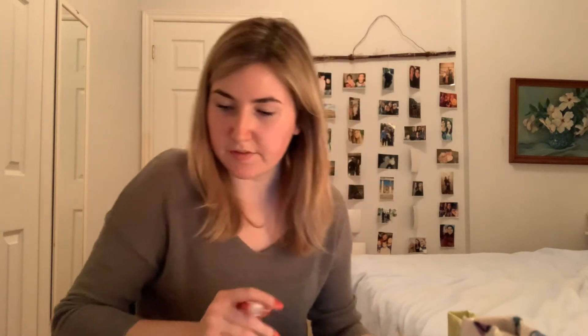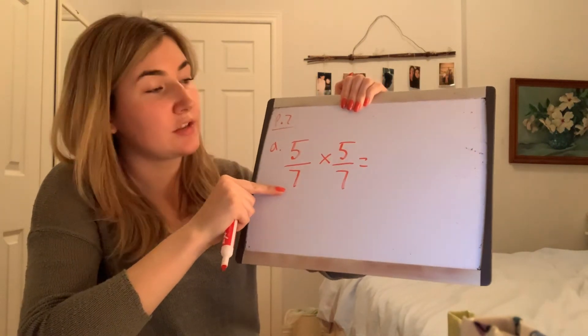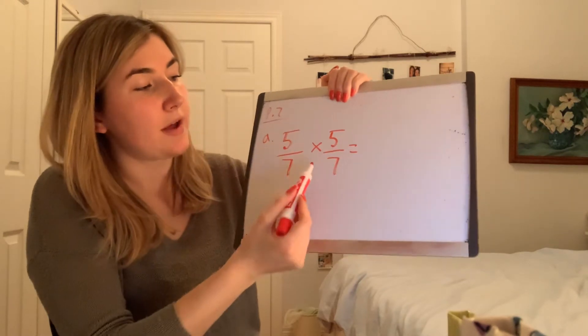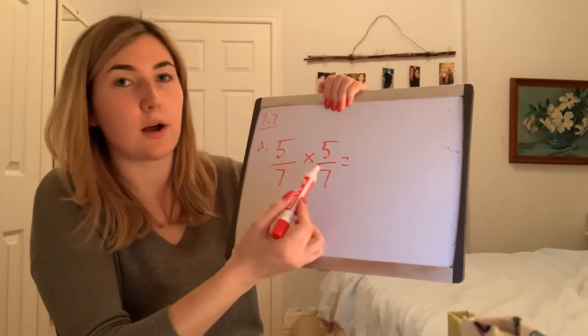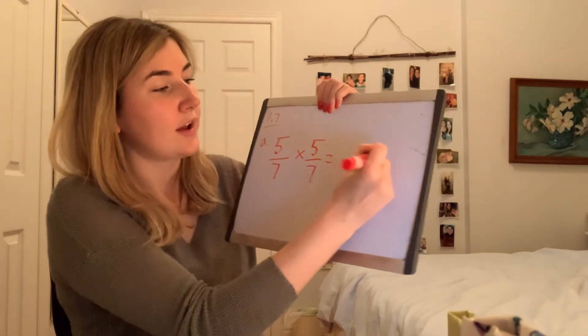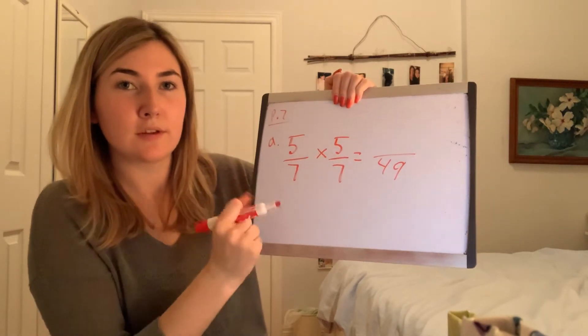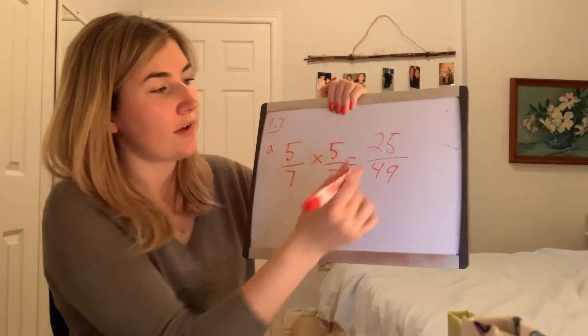For part 7 we're multiplying, adding, and subtracting fractions. In A we have 5 over 7 times 5 over 7. Remember when we're multiplying, both the top and the bottom number will change — it doesn't matter if it's the same bottom number. So our bottom is 7 times 7 equals 49, and our top number is 5 times 5 equals 25. Our final answer is 25 over 49.